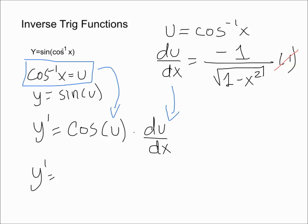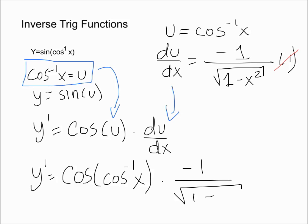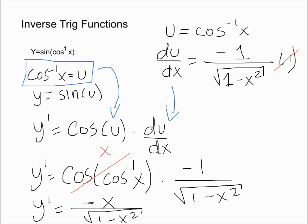So y prime is going to be equal to the cosine of the inverse cosine of x times du/dx, which is negative 1 over the square root of 1 minus x squared. We can simplify this since cosine of the inverse cosine of x equals x, so our final result is y prime equals negative x over the square root of 1 minus x squared.